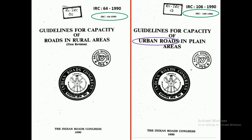In this Traffic Volume Survey and Analysis, we are going to refer two IRC codes: one is IRC 64-1990, and the other is IRC 106-1990. IRC 64 gives guidelines for the capacity of roads in rural areas. IRC 106 gives guidelines for the capacity of urban roads in plain areas. In this video, we are going to discuss about urban roads, so we will refer only IRC 106 urban road guidelines.